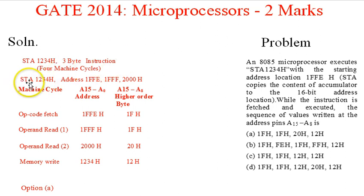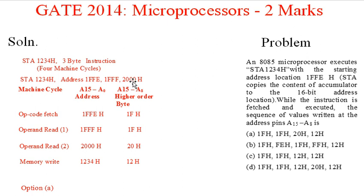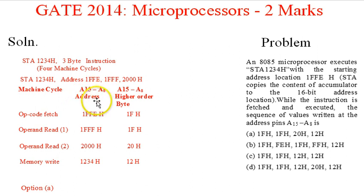We take the instruction as STA 1234H. The starting address given is 1FEEH. The next addresses would be 1FFFH and then 2000H. Now we write out the machine cycles for this instruction and determine the content of the address bus A0 to A15, specifically the upper byte A15 to A8.